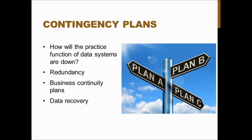Contingency plans are in place in case data systems go down and the practice still needs to function. Redundancy covers scenarios like the Wi-Fi being down but the internet still working — you could plug in your computer to keep functioning. Business continuity plans cover situations where all systems are down, using paper records to document and function in that capacity. Data recovery then allows you to input that information back into the computer and recover any lost data.